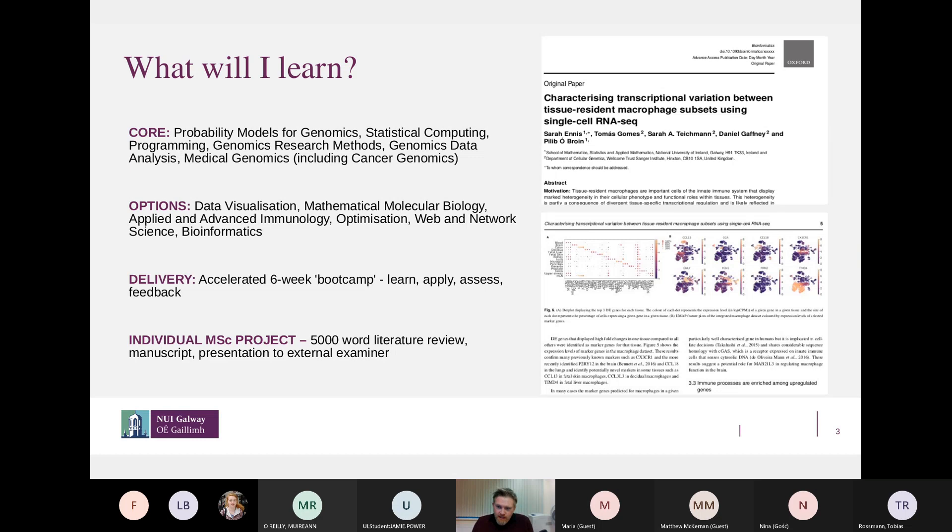What we have then is, like the MSc in mathematics, we have an individual MSc project, and there's a few different components to this. So there's a 5000 word literature review that students complete in semester two. We don't have a standard thesis submission, we actually moved away from a thesis submission to a manuscript submission.